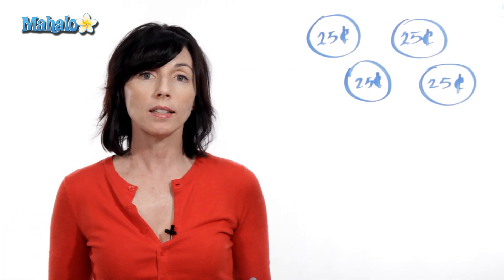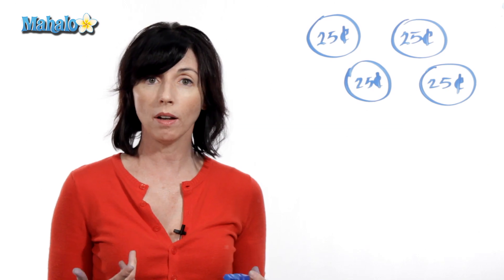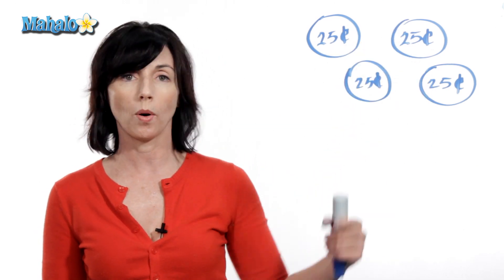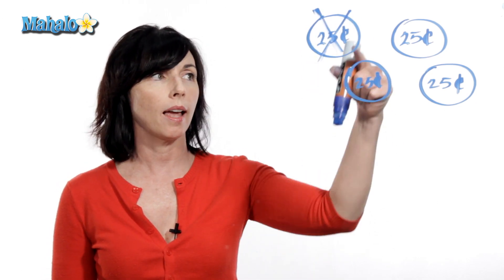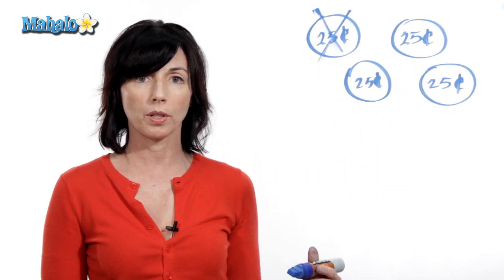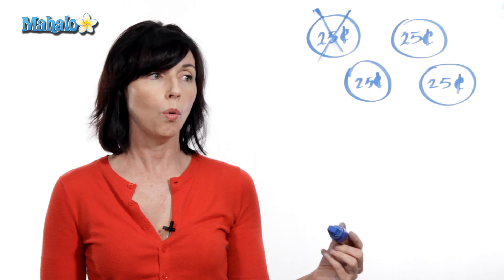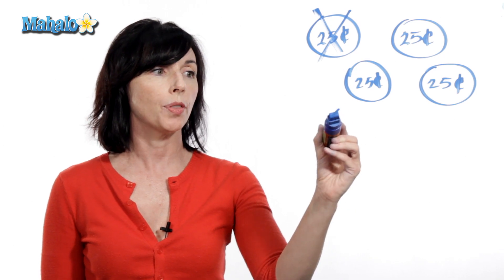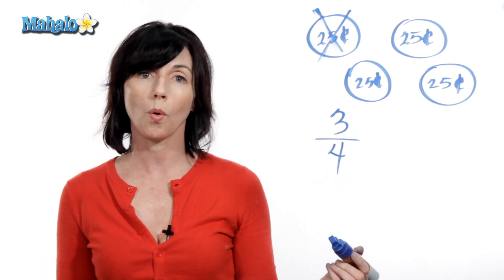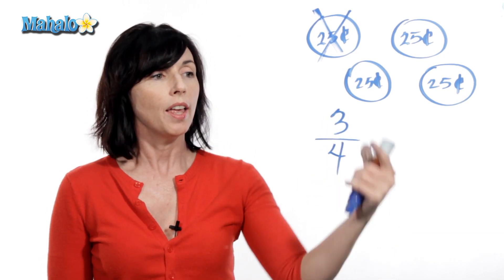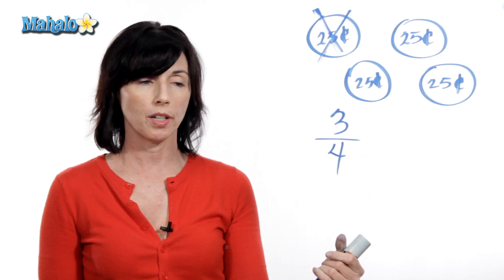So let's say I have $1 in quarters, so I've got four quarters. Suppose I put one of my quarters in a parking meter, so one of them is gone. That means I have three quarters left, or I have three out of my original four quarters left. This is a fraction.